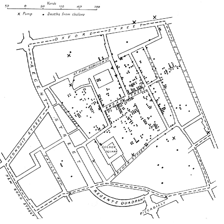GIS provide platforms for managing these data, computing spatial relationships such as distance, connectivity and directional relationships between spatial units, and visualizing both the raw data and spatial analytic results within a cartographic context. Subtypes include geovisualization, which combines scientific visualization with digital cartography to support the exploration and analysis of geographic data and information, including the results of spatial analysis or simulation.